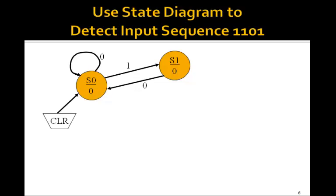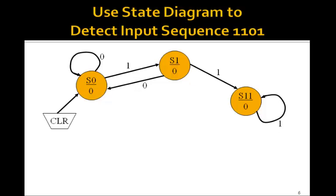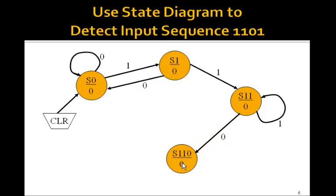Suppose we get a second 1 in a row — we'll go to a new state S11. This means we've seen two 1s in a row. We label the transition input as 1, and the output is still 0. Now suppose we get a third 1: we can just stay in S11, because we have two or more 1s in a row and we're on our way to 1,1,0,1. It's not until we get the next 0 that we go to another state, S110. This means the last inputs seen were 1,1,0, and the output is still 0 because we haven't found 1,1,0,1 yet.